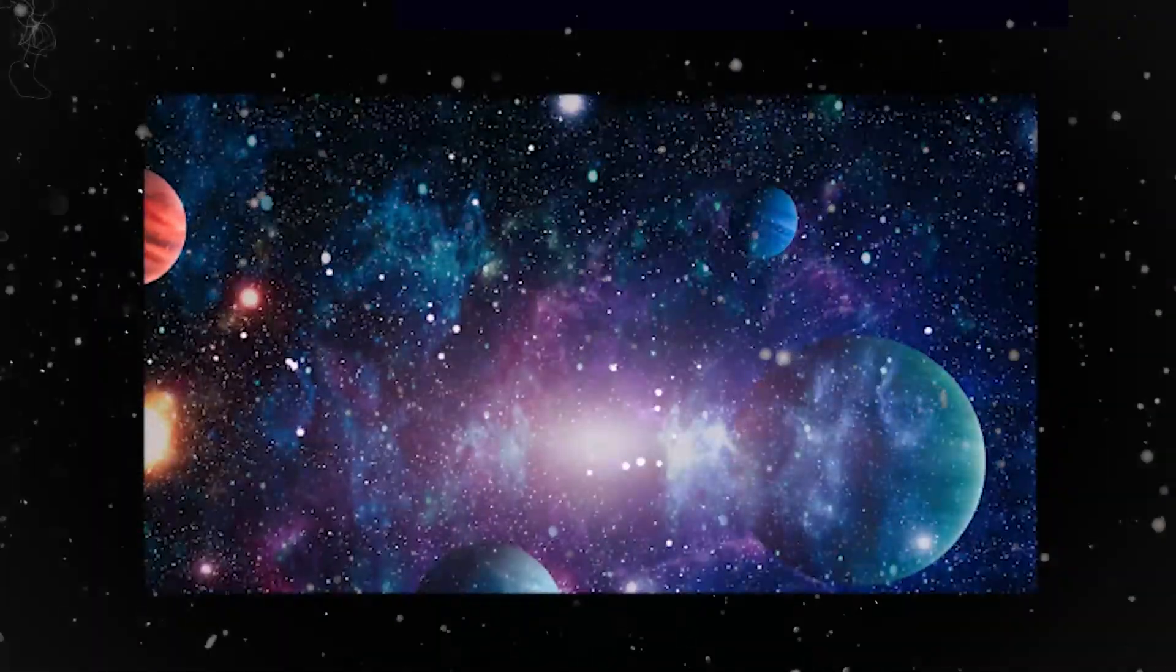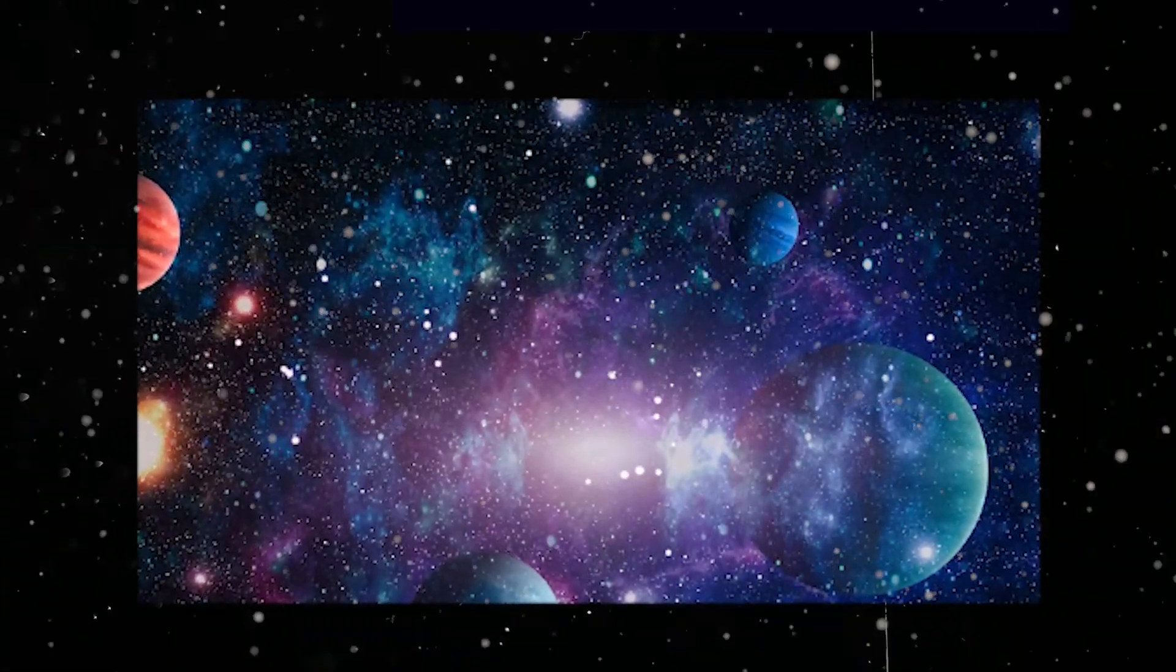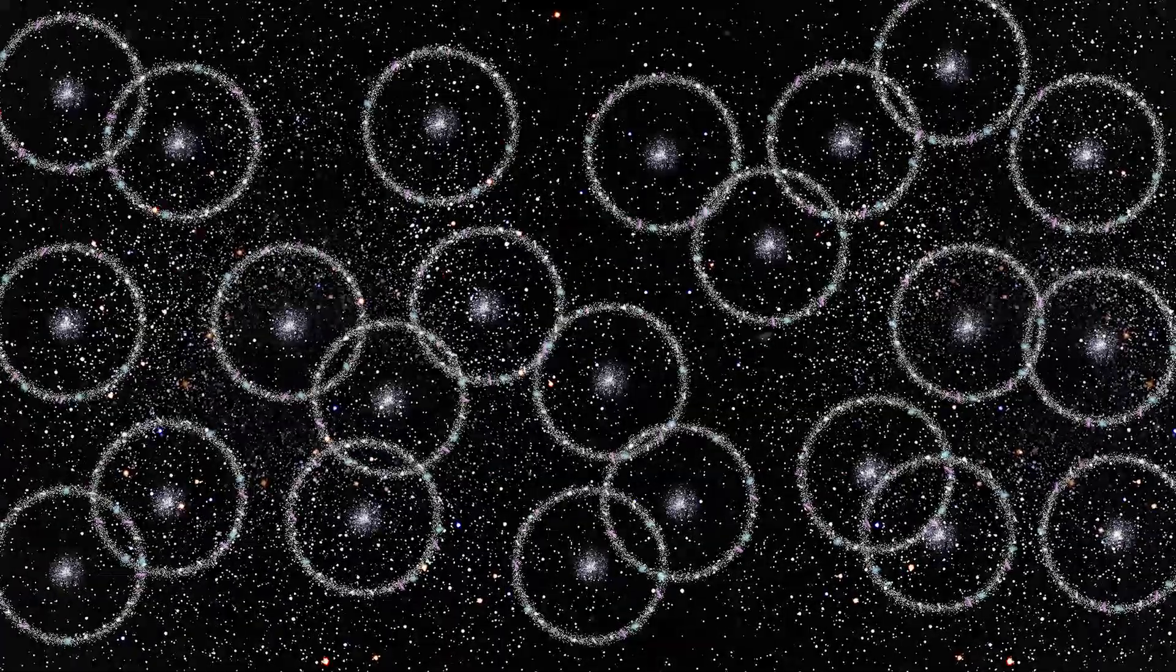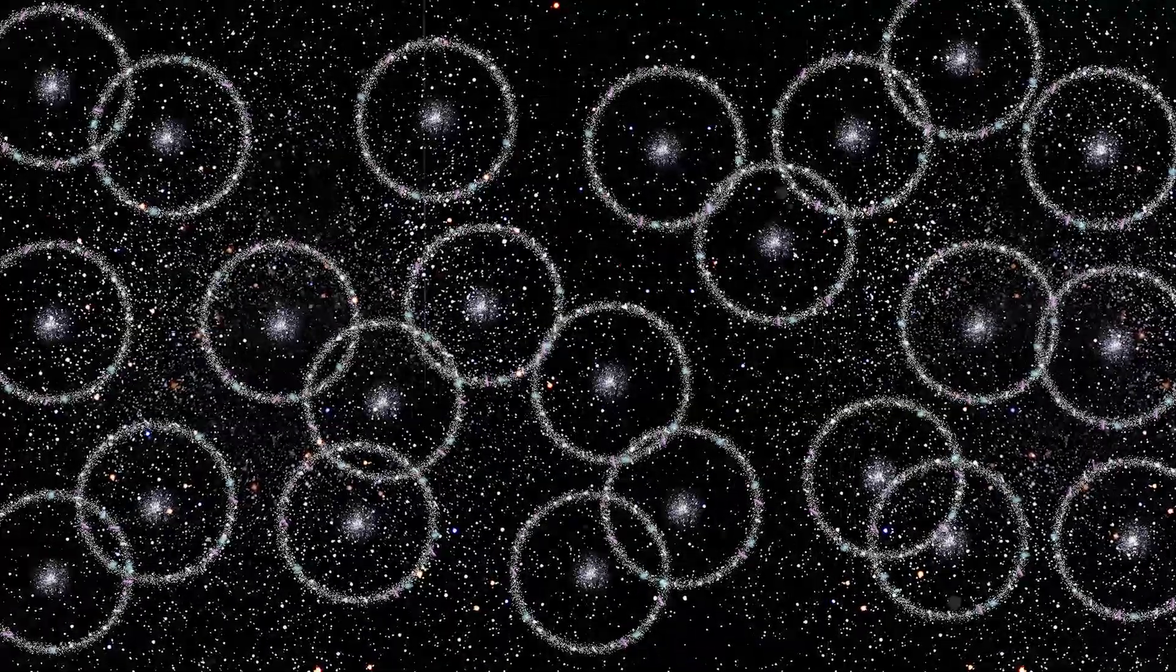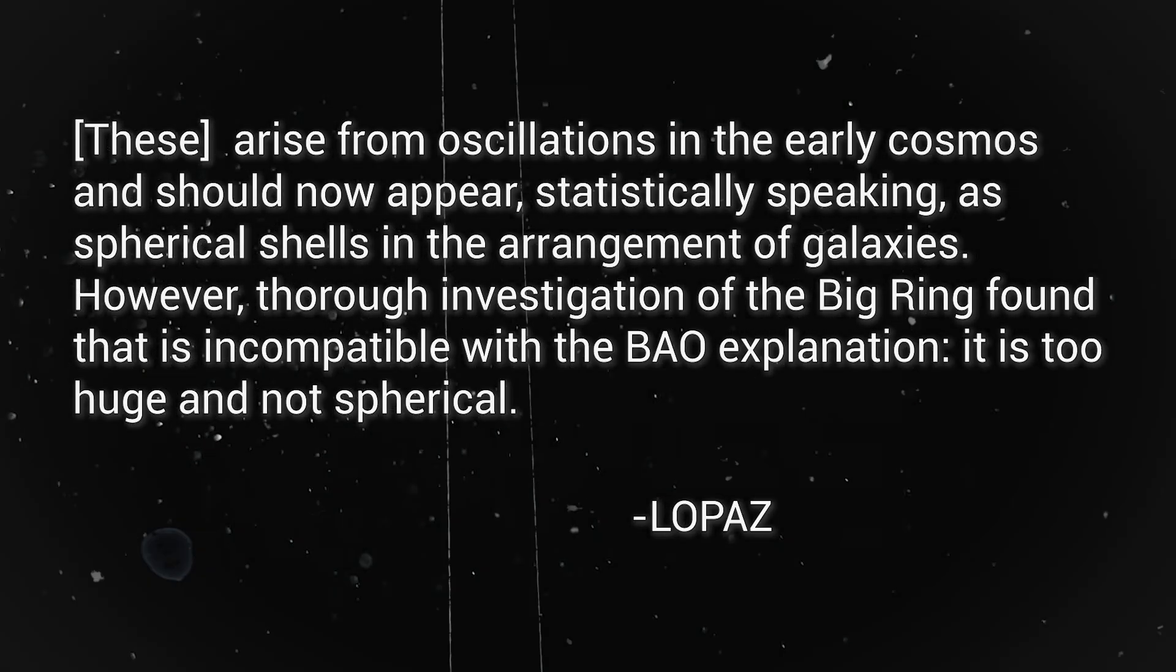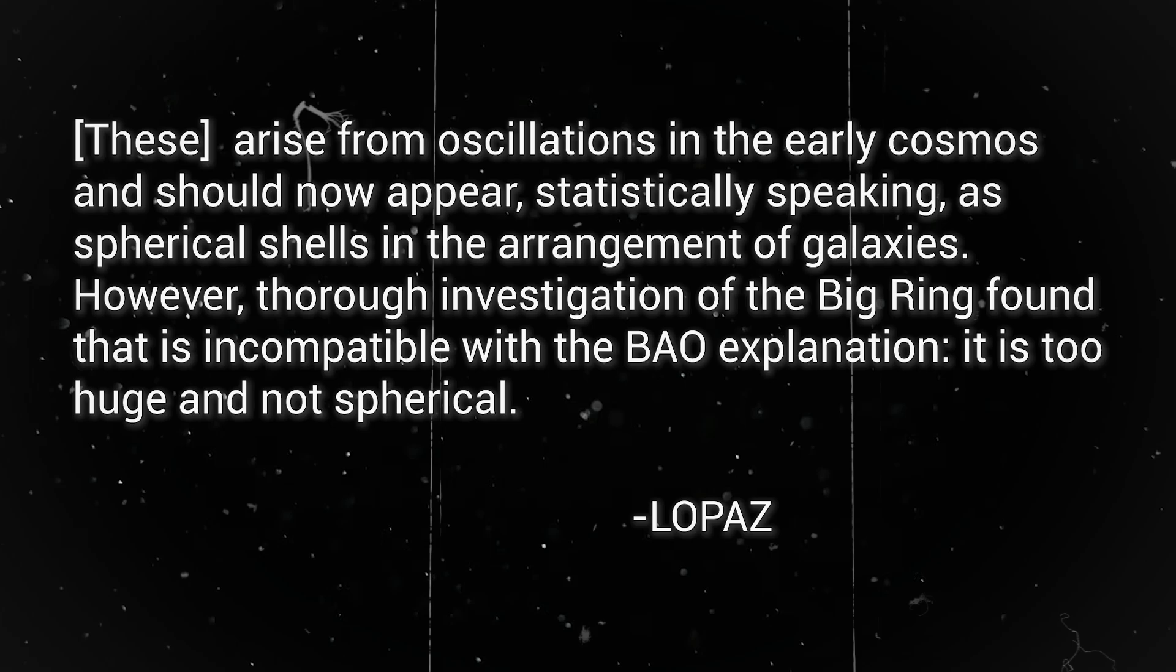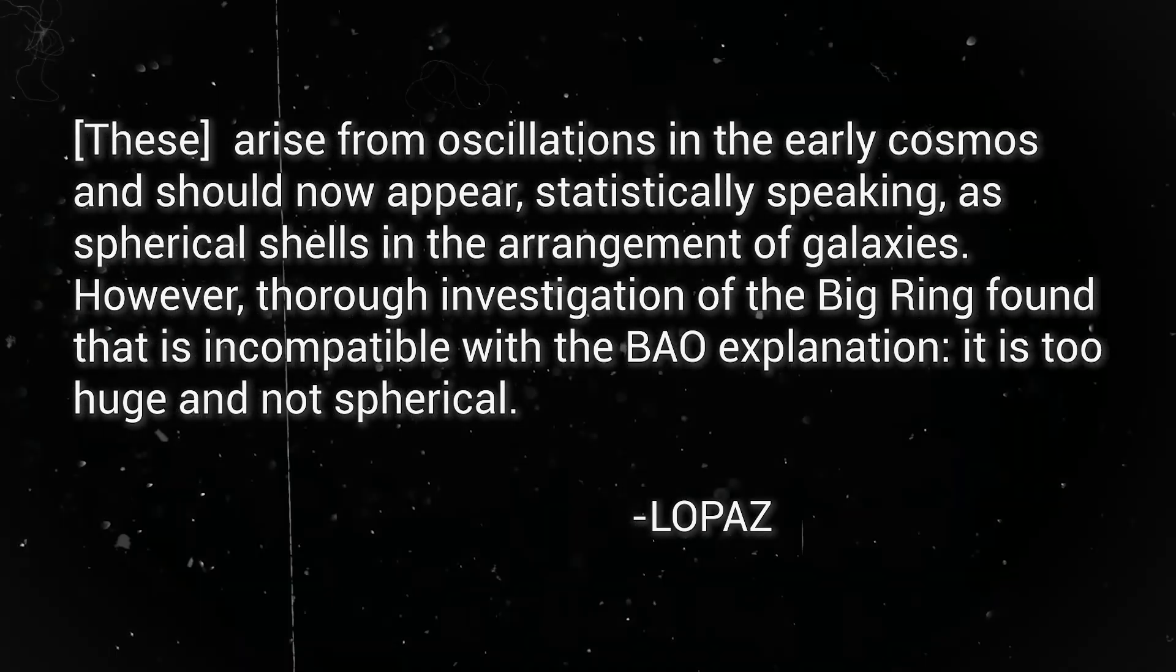The peaks of the waves represent what scientists now call the cosmic web of matter, and it was at these peaks that galaxies and galaxy clusters began to emerge. One possibility is that the Big Ring could be related to Baryonic Acoustic Oscillations. These arise from oscillations in the early cosmos and should now appear, statistically speaking, as spherical shells in the arrangement of galaxies.